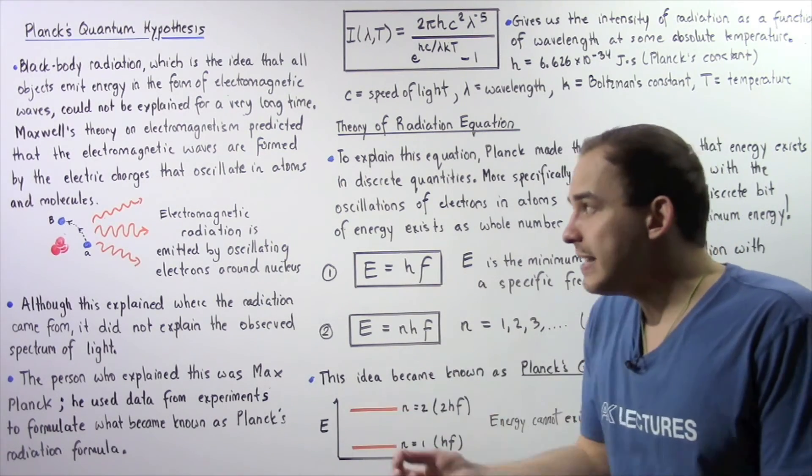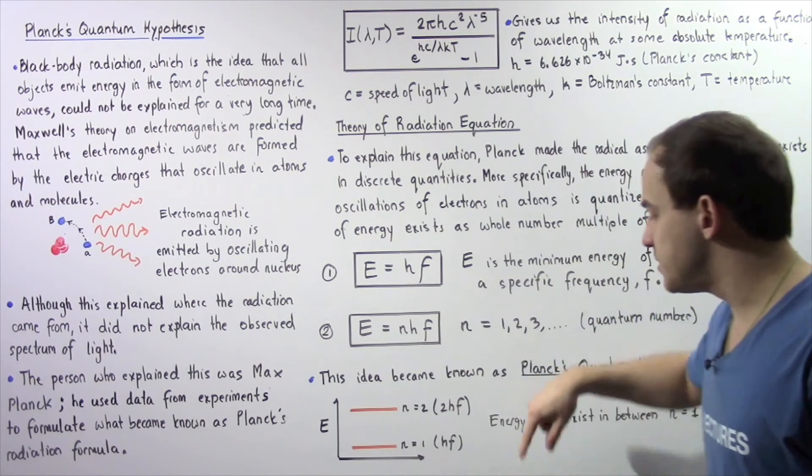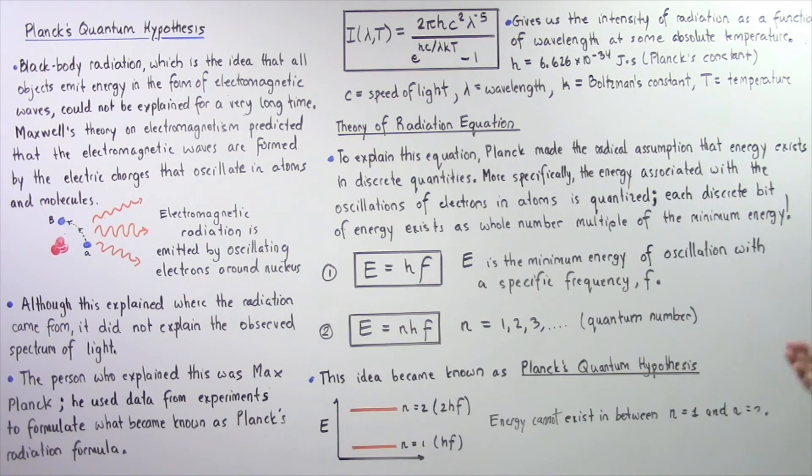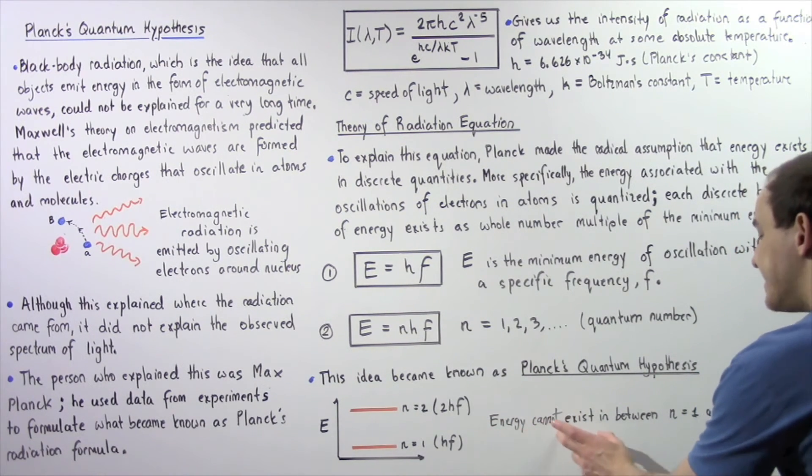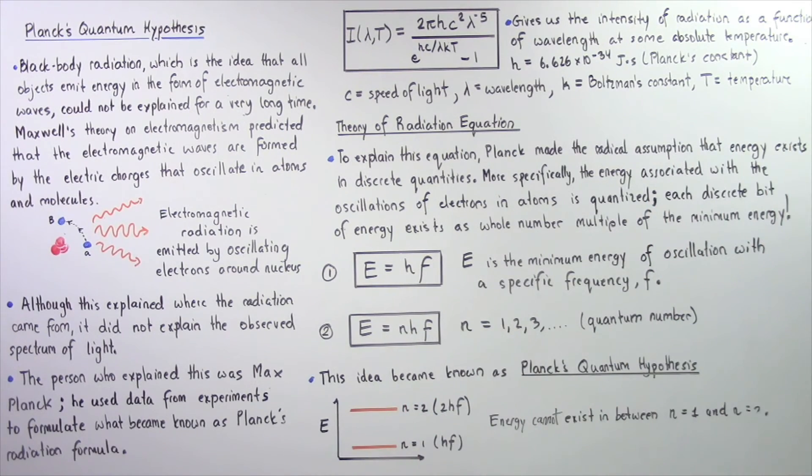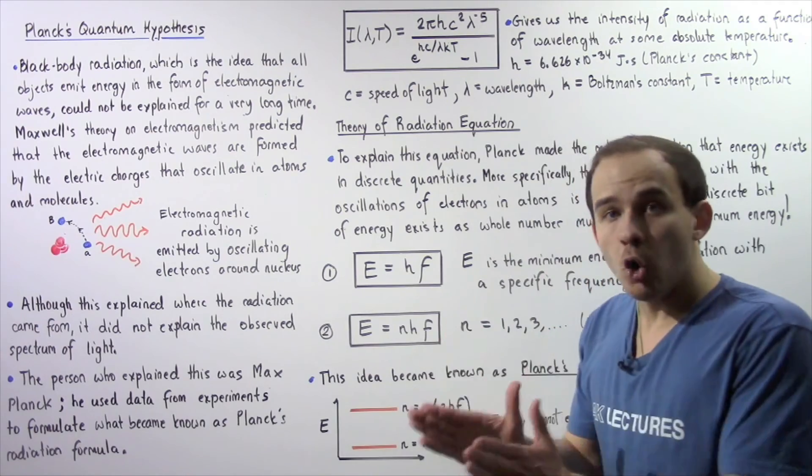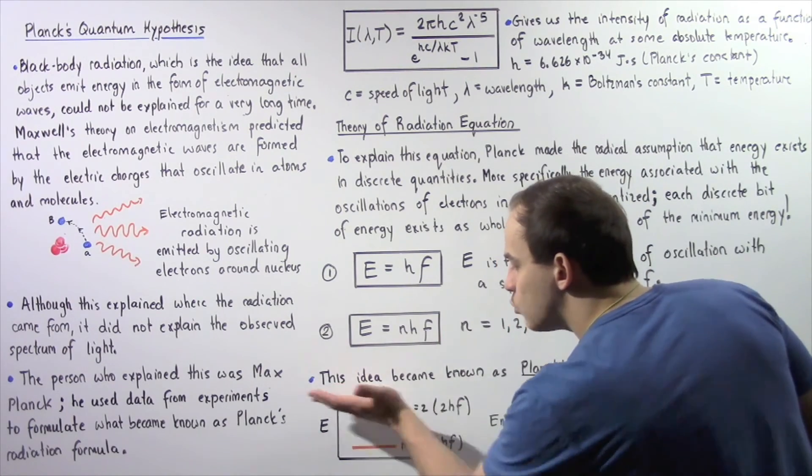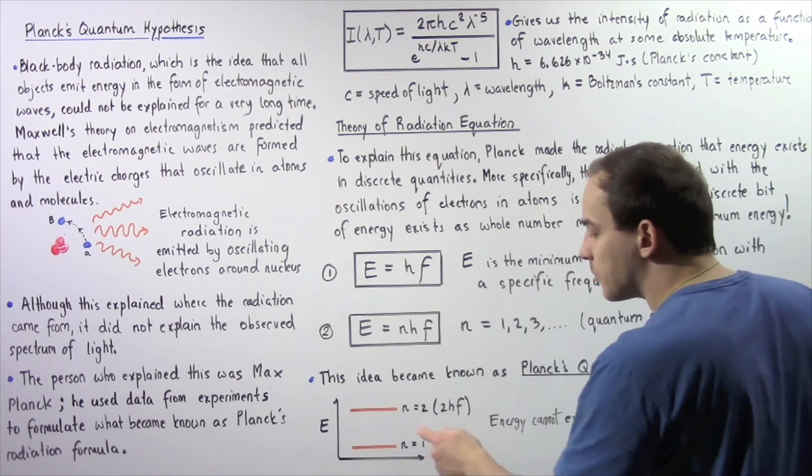Now this energy is given for some specific frequency given by F. Now what the quantum theory tells us, what Planck's quantum hypothesis tells us, is energy cannot exist in between N equals one and N equals two. The energy can only be at either N equals one or N equals two or some higher number.